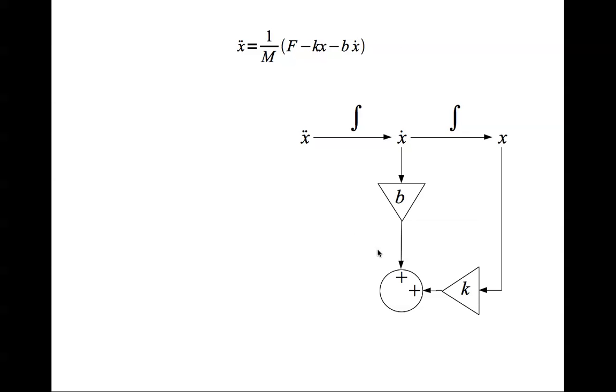Now we subtract the sum from F like so, and then we scale the result by 1 divided by M like so. That equals x double dot.